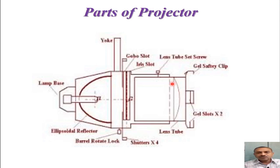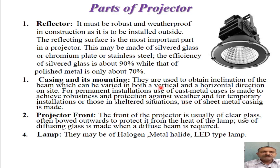Before the beam exits the projector, it passes through an outer glass on the front surface, which typically has a lens tube type structure and provides mechanical protection. The reflector must be robust and weatherproof since it is installed outdoors. The reflecting surface, the most important part of the projector, is made from silver glass, chromium plate, or stainless steel, all of which give 90 percent light reflection.